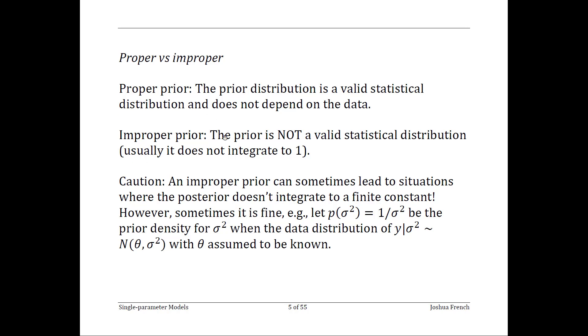An improper prior isn't a distribution. It's simply a function of the parameter. The reason it's not a distribution is because the sum or integral of the function over the support doesn't equal 1.